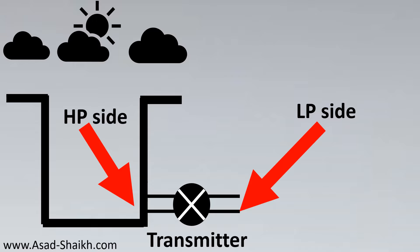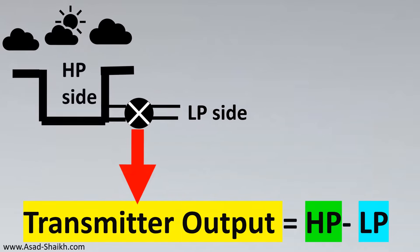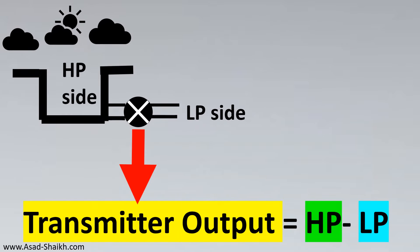This configuration that we are going to use is called the dry leg configuration. The transmitter output is always the difference between the HP side and the LP side — thus the name differential pressure transmitter. It gives the difference between the HP side and the LP side.